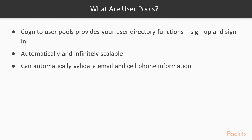What are user pools? Cognito user pools provides your user directory functions: sign-up and sign-in. This is where your users' data resides if not using other identity providers. It's automatically and infinitely scalable — AWS takes care of scaling automatically. It can automatically validate email and cell phone information, and will send confirmation codes via email or SMS.